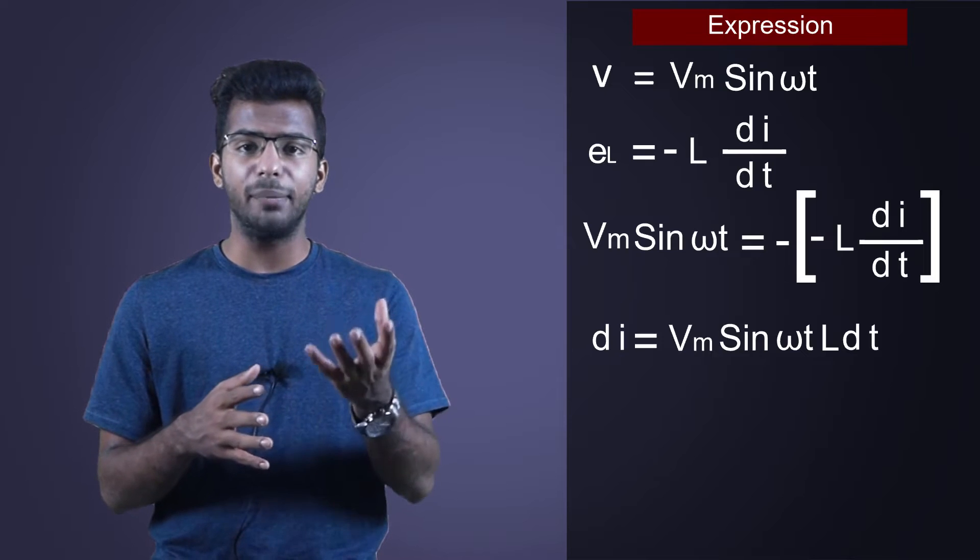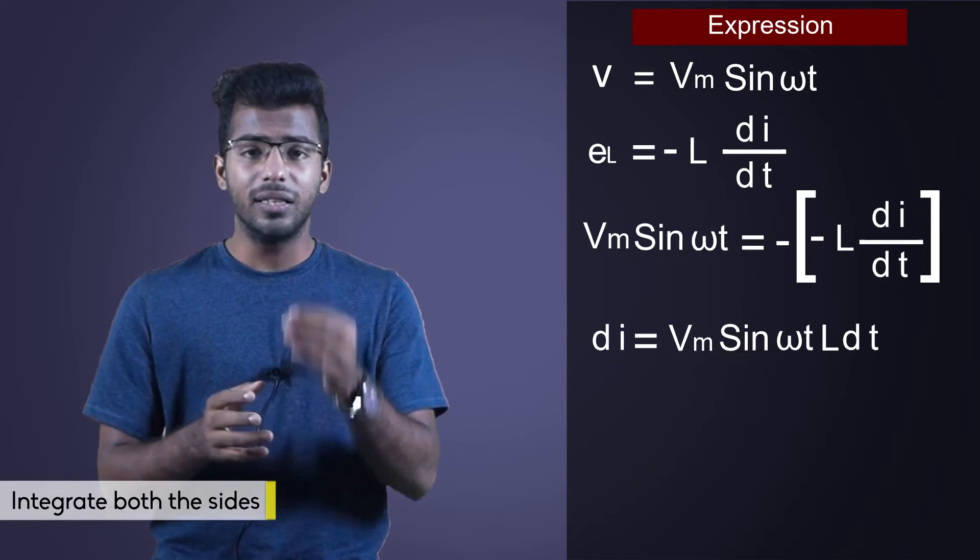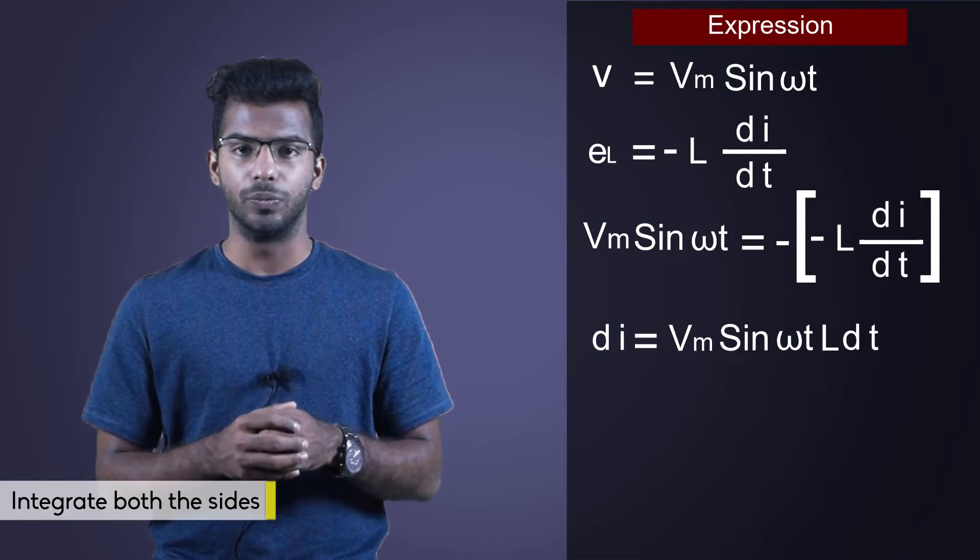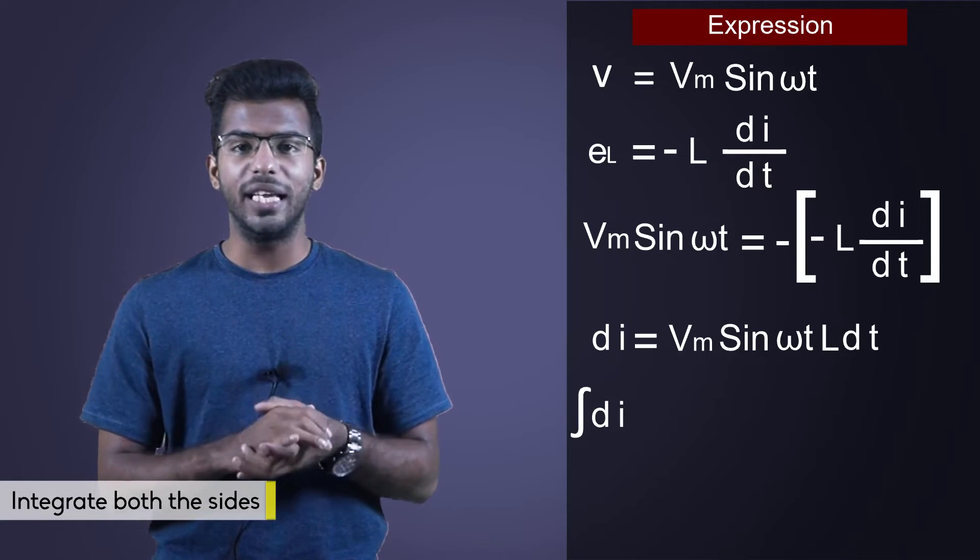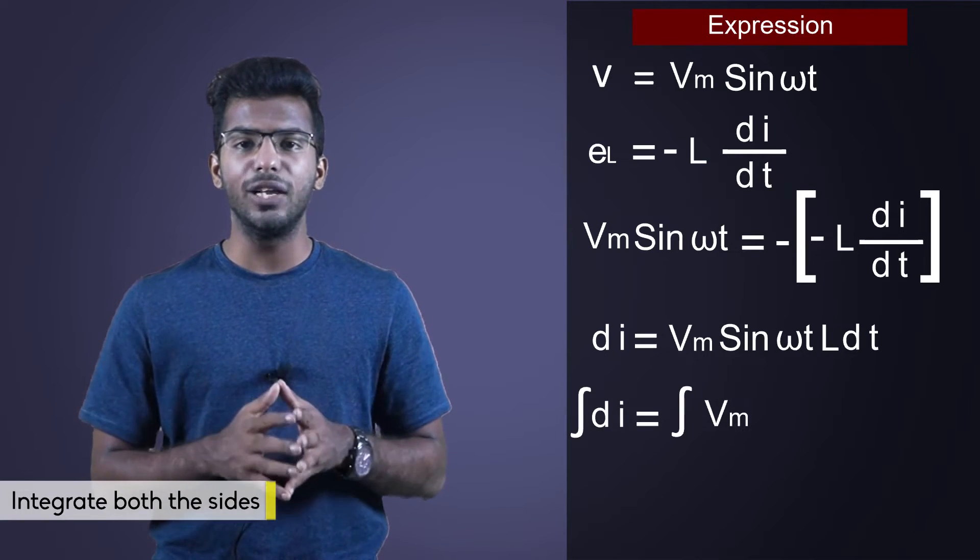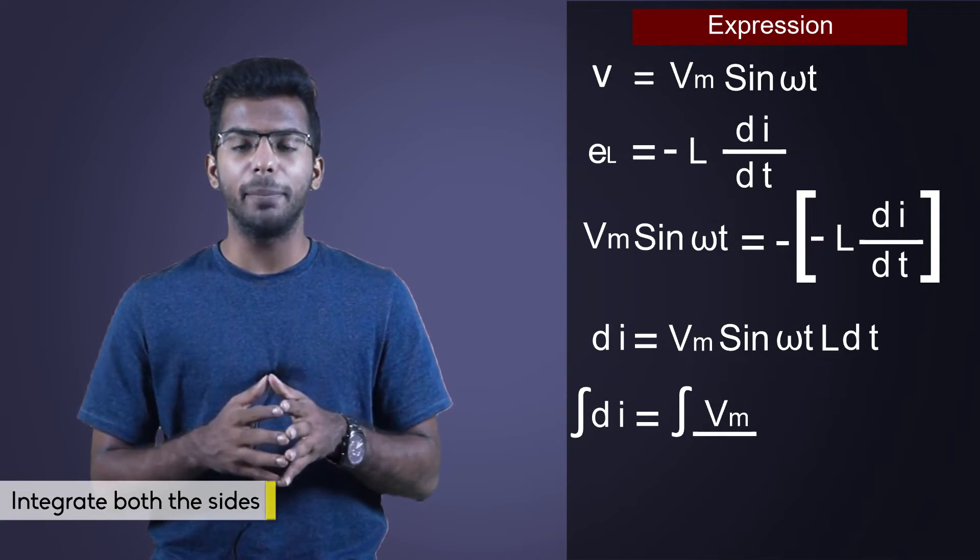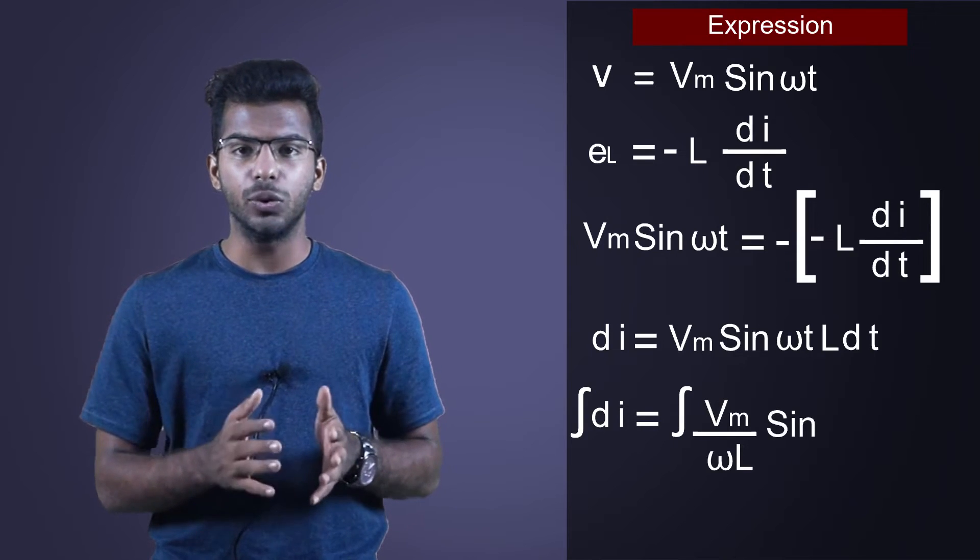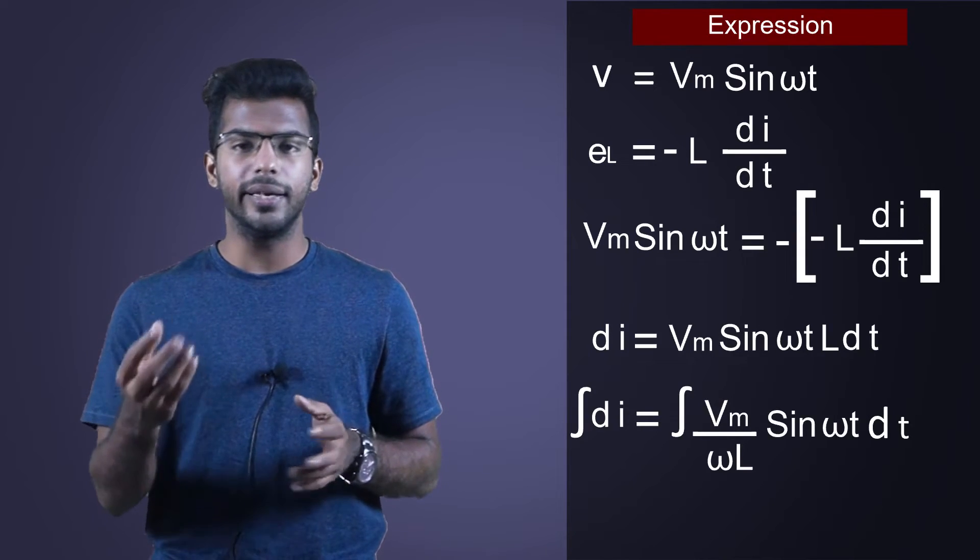So if we integrate both the sides, we will get the instantaneous current value. So integral of di is equal to integral of Vm divided by omega L into sin omega t into dt.